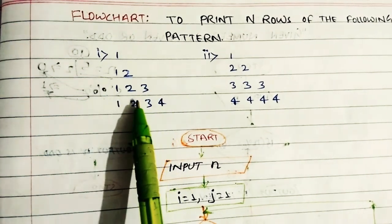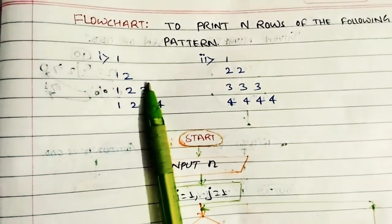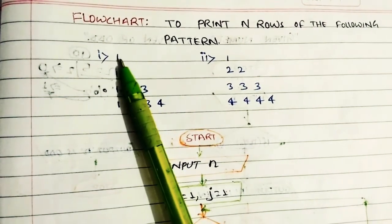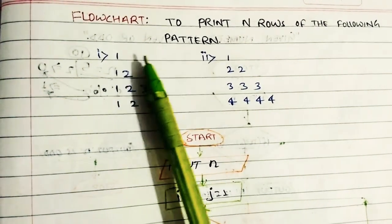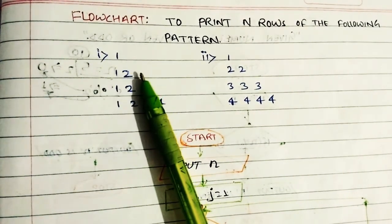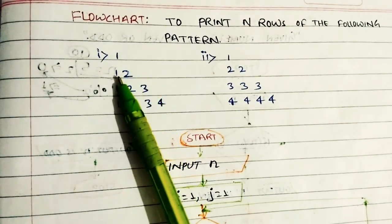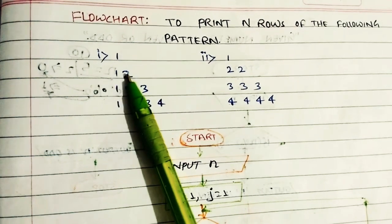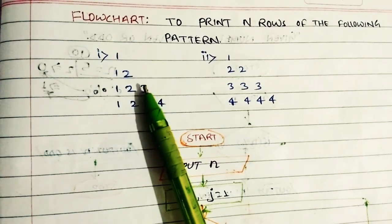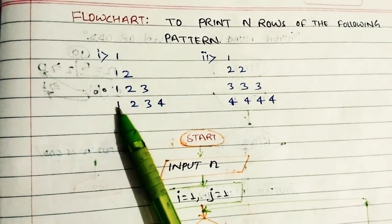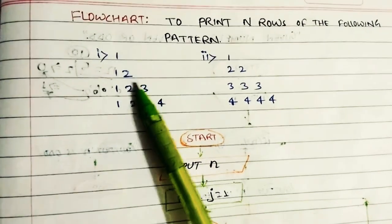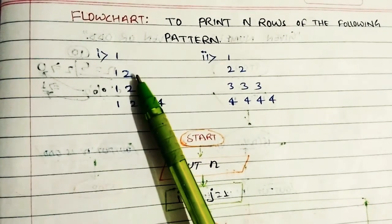If the N value is 4, in the first row it starts from 1. This is the main point — each row starts from 1, and we need to remember that a new line changes after each row.